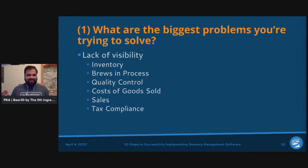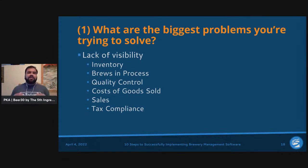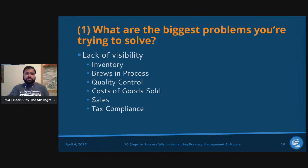Tax compliance is also key — whether it's the Brewer's Report of Operations, TTB excise, state excise in the United States, or internationally, for example in Australia and New Zealand having a two-click excise tax return. Without proper data points all tied in, there's a huge lack of visibility. The key takeaway for step one: understand what problems you're trying to solve at your brewery.